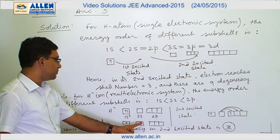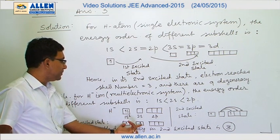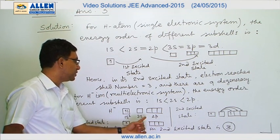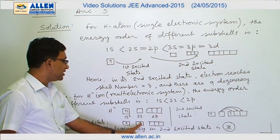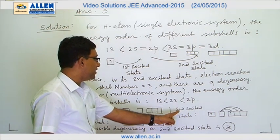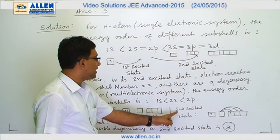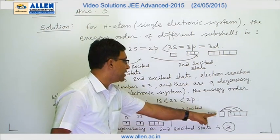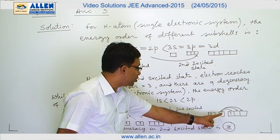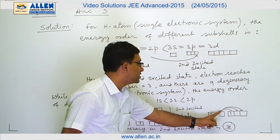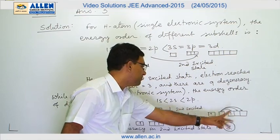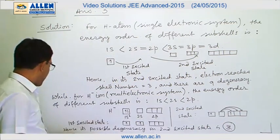In the second excited state, the electron does not jump from 1s to 2s, because the energy gap there is larger compared to the energy gap between 2s and 2p. Hence, the electron from 2s is shifted to 2p, giving a configuration of 1s¹ 2s¹ — as shown in the figure.